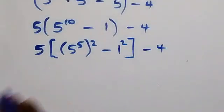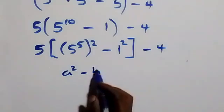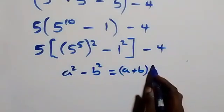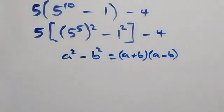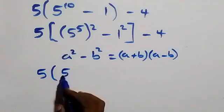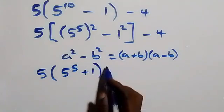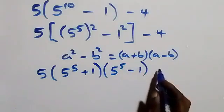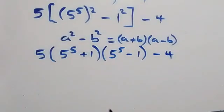What we have follows from the difference of two squares: a squared minus b squared, which can be written as a plus b multiplied by a minus b. Following this, we have 5 into bracket: 5 raised to power 5 plus 1, close bracket, multiplied by bracket: 5 raised to power 5 minus 1, close bracket, then minus 4.